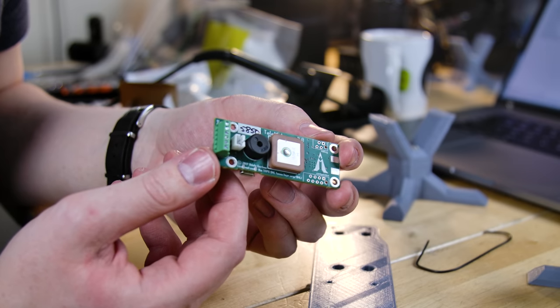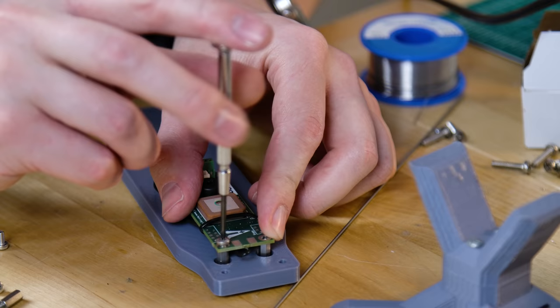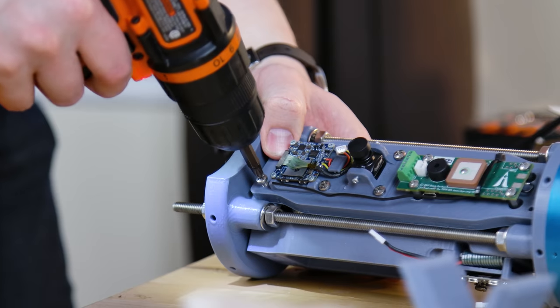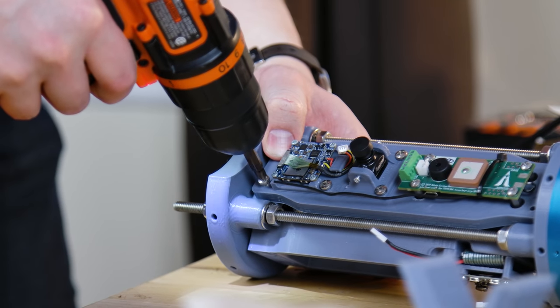The Telemetrum is a dual-deploy computer, but it can do a few other things. It has a GPS on board, it's able to broadcast telemetry on about 433 megahertz. I selected the Telemetrum because I had heard good reviews from friends who had used one, and I know that it's flight-proven on a lot of high-risk flights.